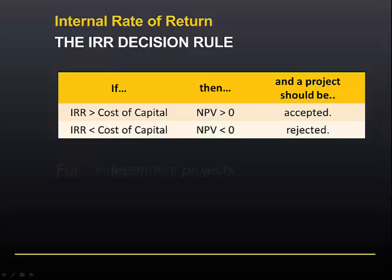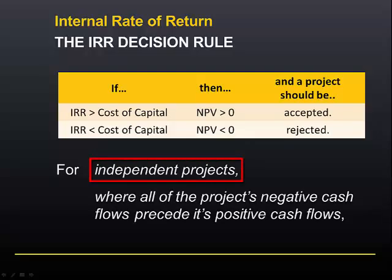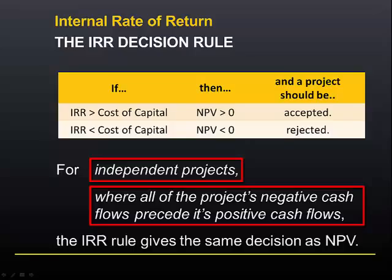We can therefore say that for independent projects where all of the project's negative cash flows precede its positive cash flows, the internal rate of return rule will give us the same decision as NPV.